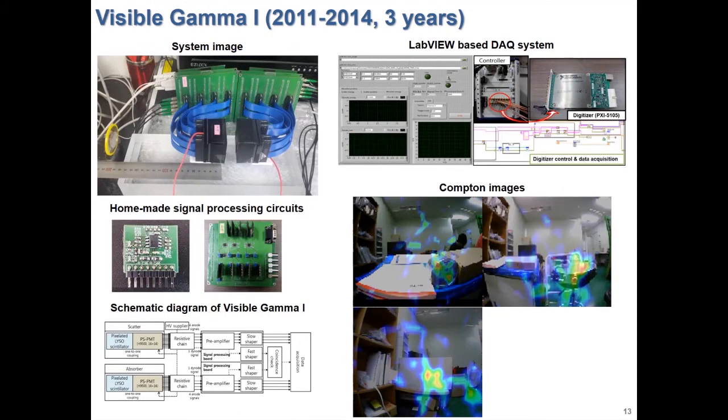Next is Visible Gamma 1, and it uses small scintillation materials and MAPMT. We use in-house charge division circuit, amplifier, and signal processing board for the signal processing system of the imaging device.